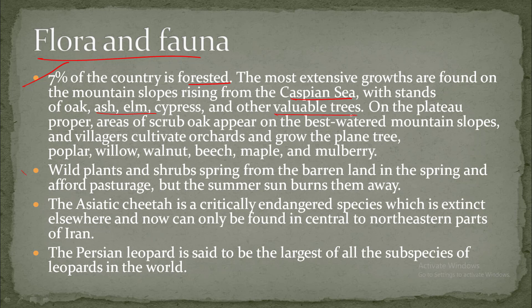On the plateau proper, areas of scrub oak appear on the best-watered mountain slopes, and villagers cultivate orchards and grow plane trees, poplar, willow, walnut, beech, apple, and mulberry. Wild plants and shrubs spring from barren lands in spring, but in the summer the sun burns them away.